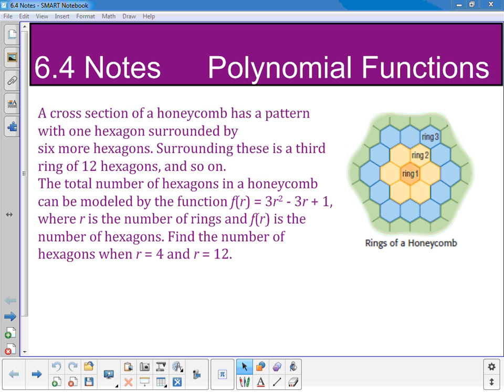The total number of hexagons in a honeycomb can be modeled by the function f(r) = 3r² - 3r + 1, where r is the number of rings and f(r) is the number of hexagons. Find the number of hexagons when r = 4 and r = 12.